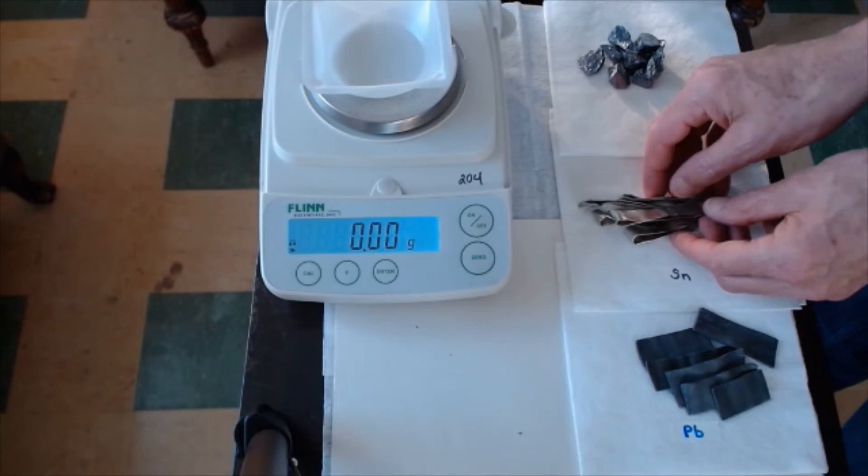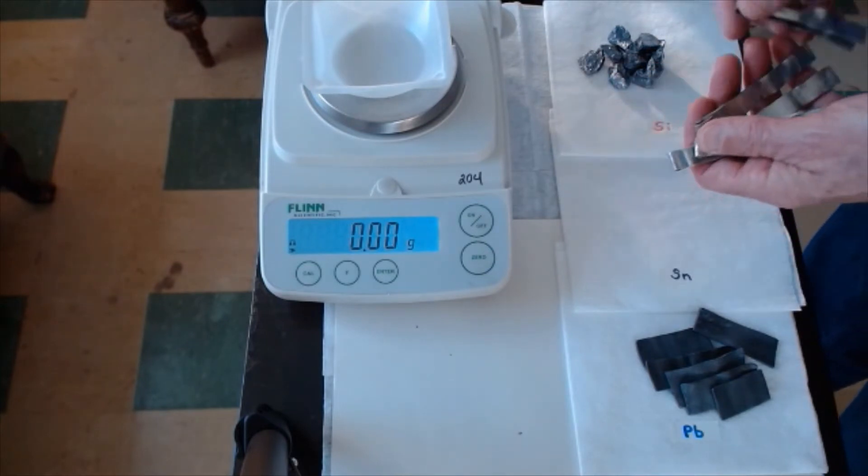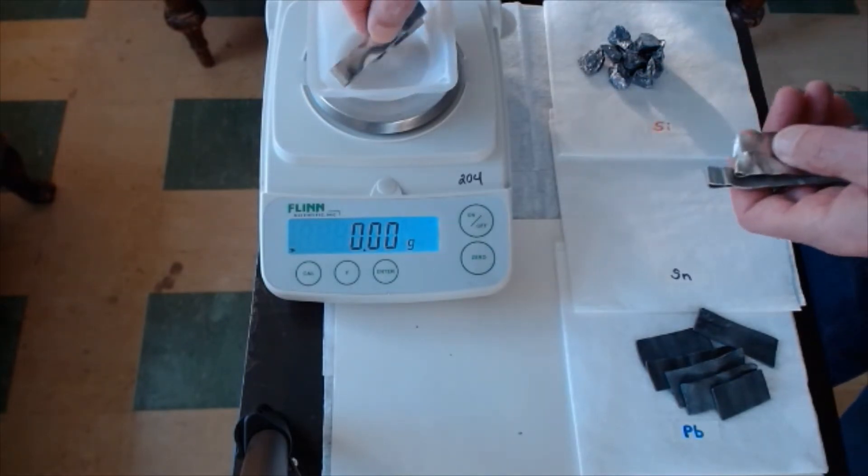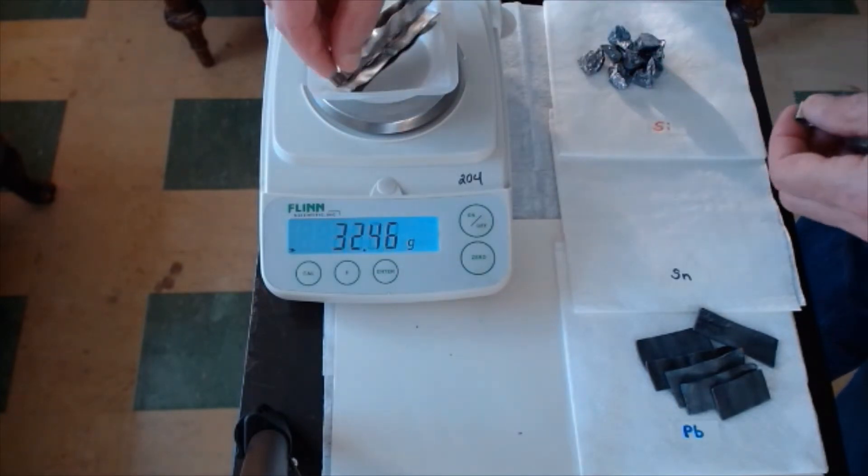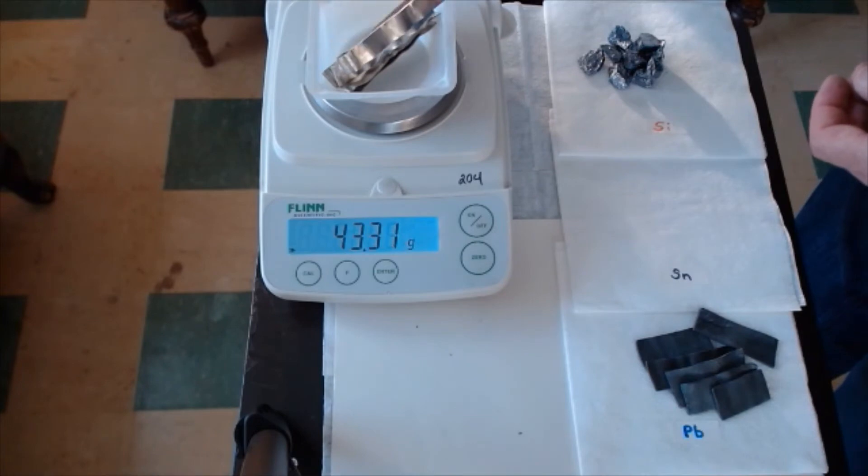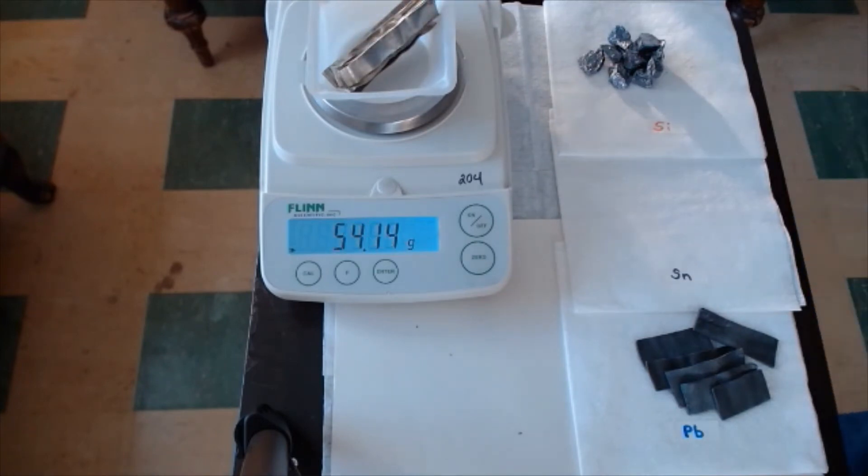And that's the mass of the tin pieces. We're just going to set all those pieces down into the weigh boat. Wait for the scale to settle down. Okay, our tin pieces, 54.14 grams. Great.